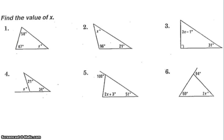Here are 6 problems going over the exterior angle theorem and the sum of angles in a triangle adding up to 180. Please finish those 6 problems and come to class with them tomorrow. That concludes sections 3.1 and 7.1.